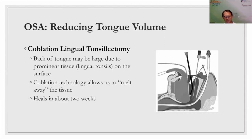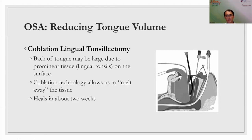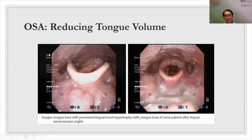For patients with large lingual tonsils, a procedure called coblation lingual tonsillectomy uses a coblation device to shave off and melt away the obstructing tissue. The before-and-after photos show how removing the lingual tonsils opens up the airway significantly for the patient to breathe.